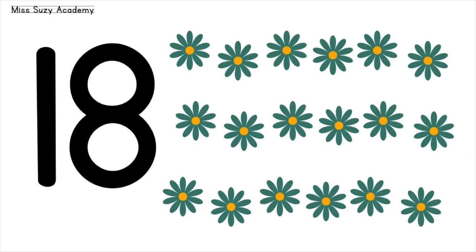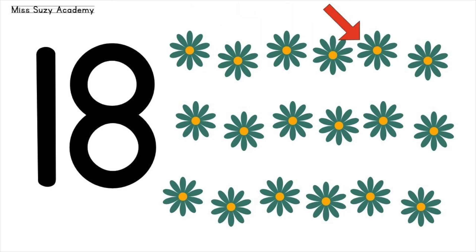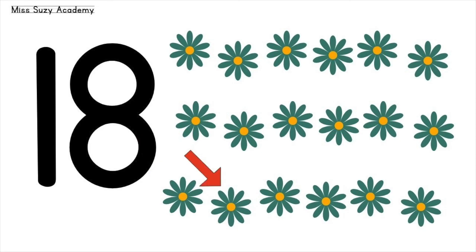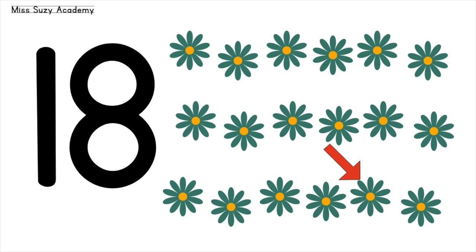18 flowers. 1, 2, 3, 4, 5, 6, 7, 8, 9, 10, 11, 12, 13, 14, 15, 16, 17, 18. 18 flowers.